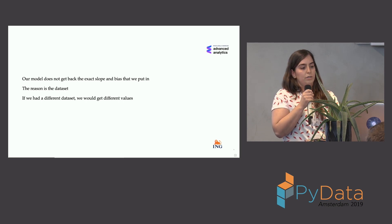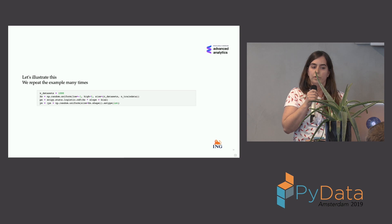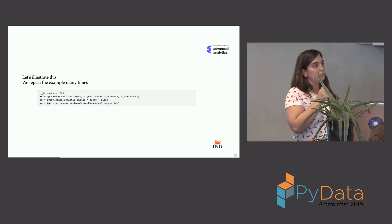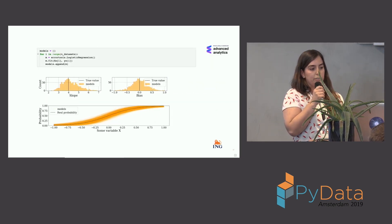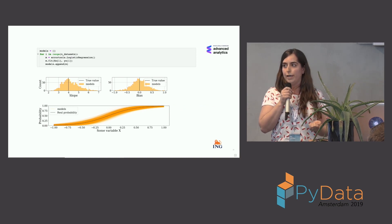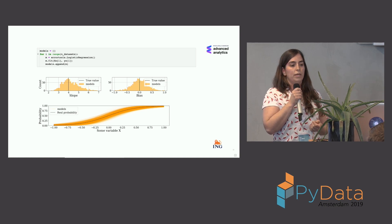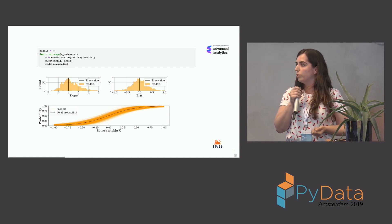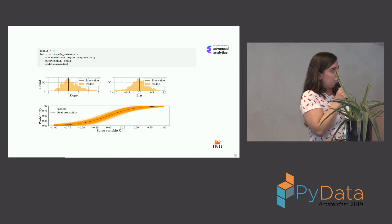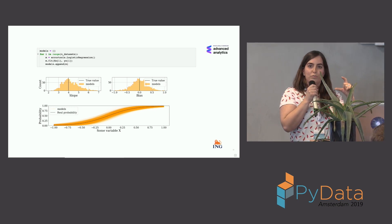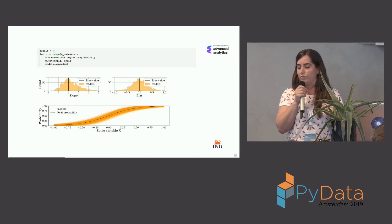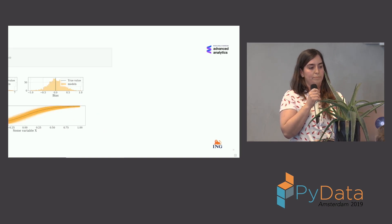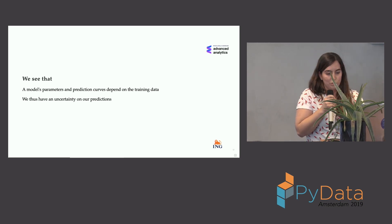What if we repeat this example a thousand times? We generate a thousand different datasets and fit a logistic regression to each. We get the distribution of slopes and biases we could have fitted. In orange you see all the curves fitted around the black one — the one we know with slope 4 and bias 0. There's quite a lot of spread around the exact function, showing the uncertainty from limited data.